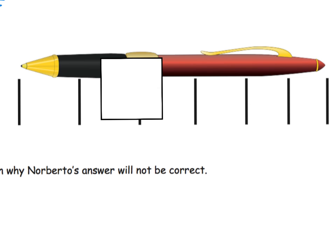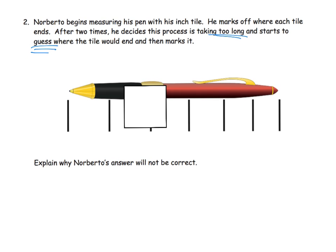So the idea is why would his answer not be correct? Well, his answer is probably not going to be correct because he's probably not going to guess perfectly. Yes, it's possible he could guess, but he's probably not going to guess exactly perfectly the way he measured perfectly with the tile at the beginning. So his guesses are not going to be as perfect as his actual measurements. And that's why his answer will not be quite correct.